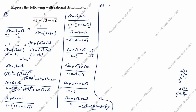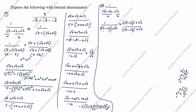Now we will see the second method. 1 divided by root 5 minus root 3 minus root 2. This time we take 'a' as root 5 minus root 3 and 'b' as root 2. We multiply by root 5 minus root 3 plus root 2, divided by root 5 minus root 3 plus root 2, applying the a minus b times a plus b formula: a squared minus b squared.